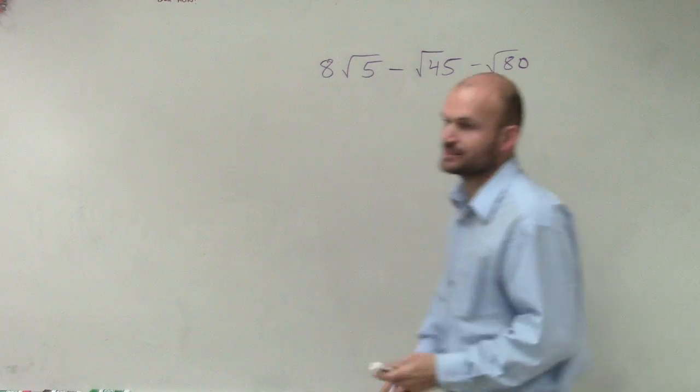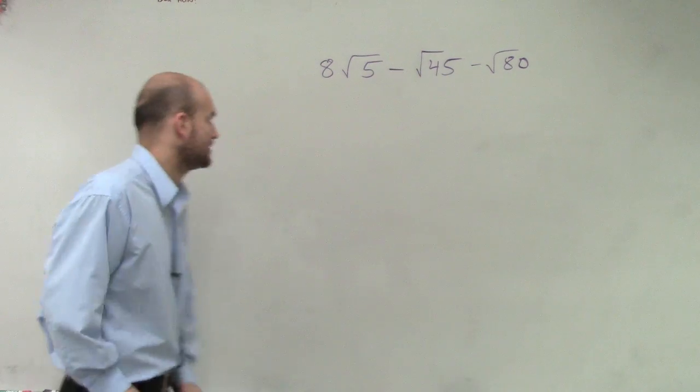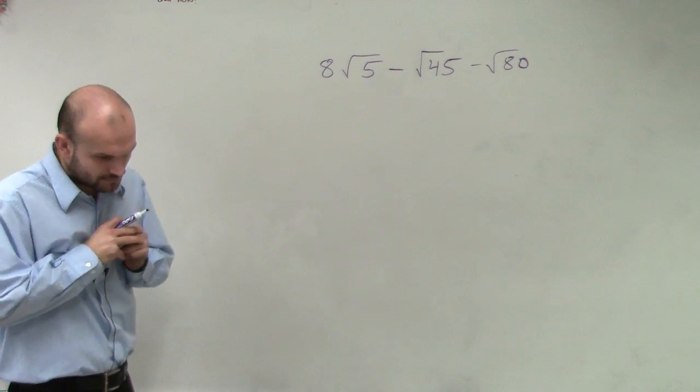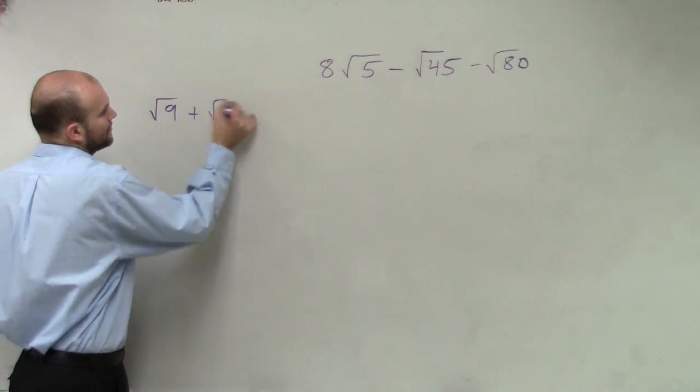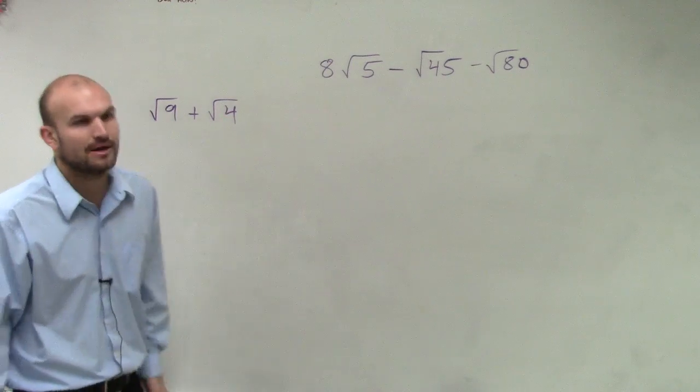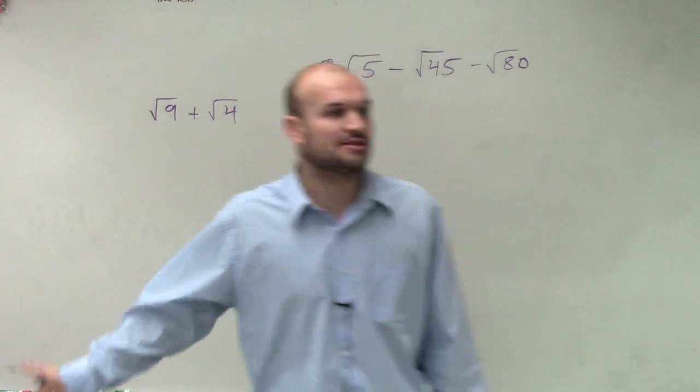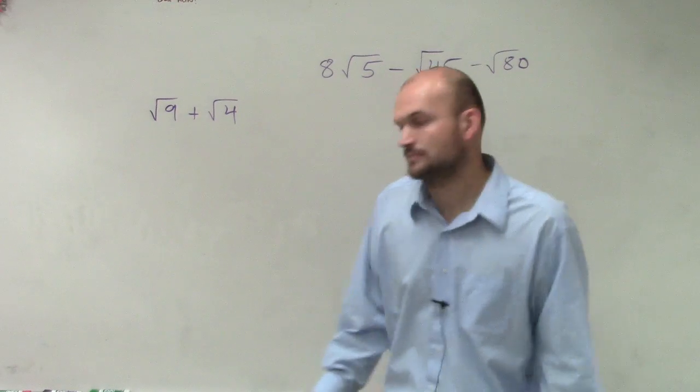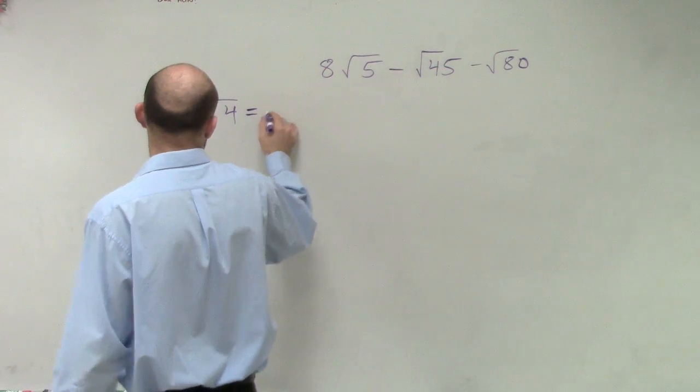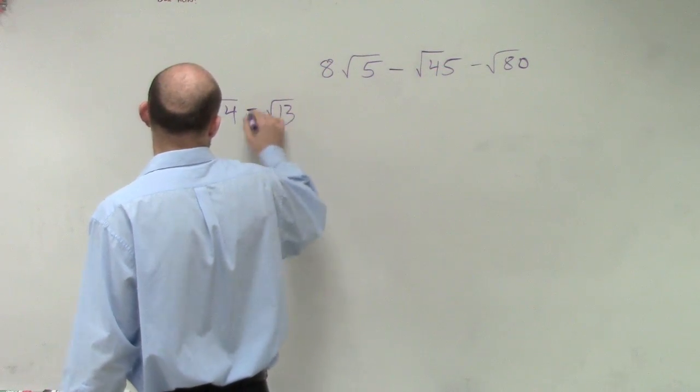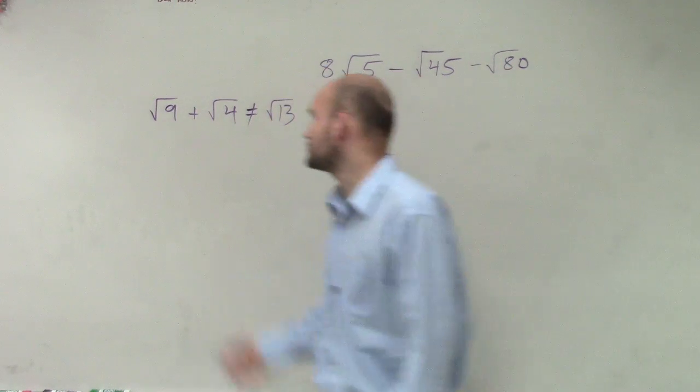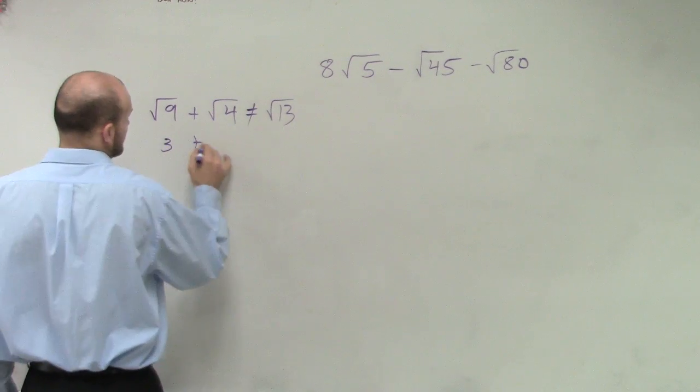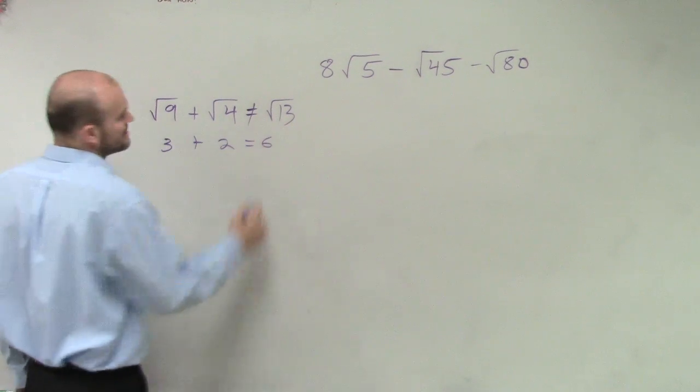Now, before I even get to this, let me just kind of do a quick little review. Let's take the square root of 9 plus the square root of 4. Now, we're not taking the square root of the same number, right? So let's add them up and see if we get square root of 9 plus square root of 4 does not equal the square root of 13. You guys know that because you know the square root of 9 equals 3 plus 2, which equals 5, right?